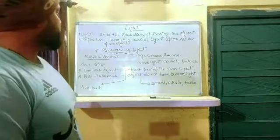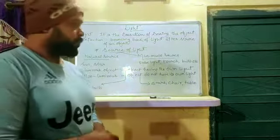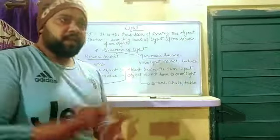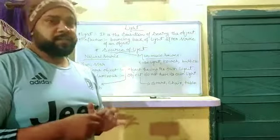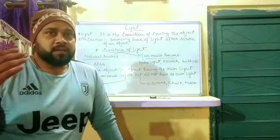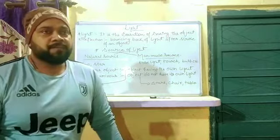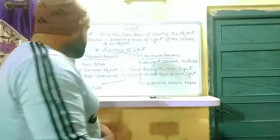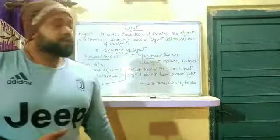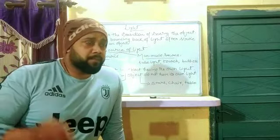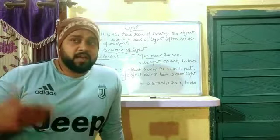If we talk about sources of light, then we talk about natural source of light and man-made source. Natural sources of light: the Sun and the stars are natural sources of light. The moon is also discussed as a source of light. Man-made sources include torch, bulb, tube light — at night time, we see objects using these.